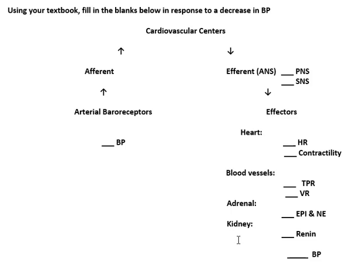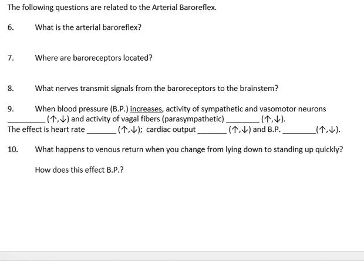The kidneys also get involved. When we cover the urinary tract and endocrine system, we'll discuss renin and how it converts angiotensinogen to angiotensin. So the kidneys, adrenals, blood vessels, and heart all participate. Hopefully this guides you to find the answers to: what is an arterial baroreflex, where are the baroreceptors, and which nerves carry afferent signals to the brain stem.